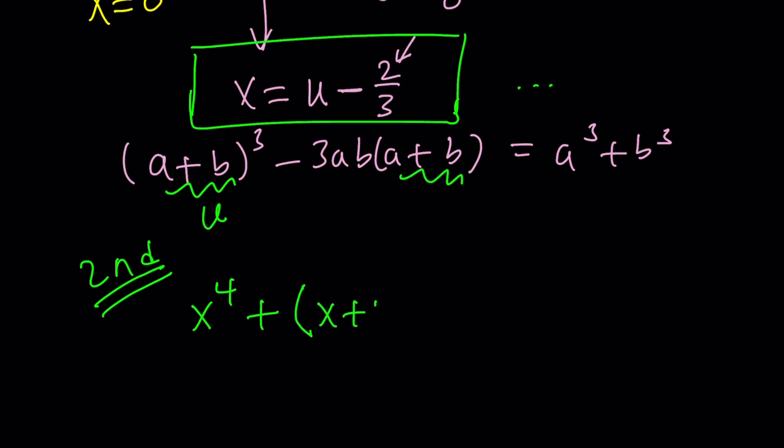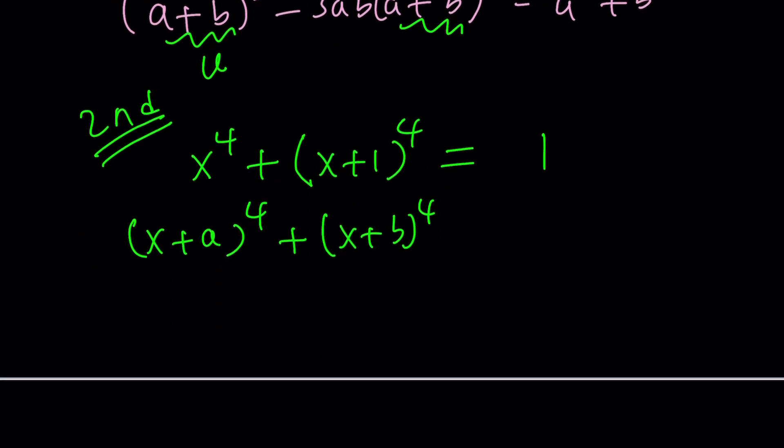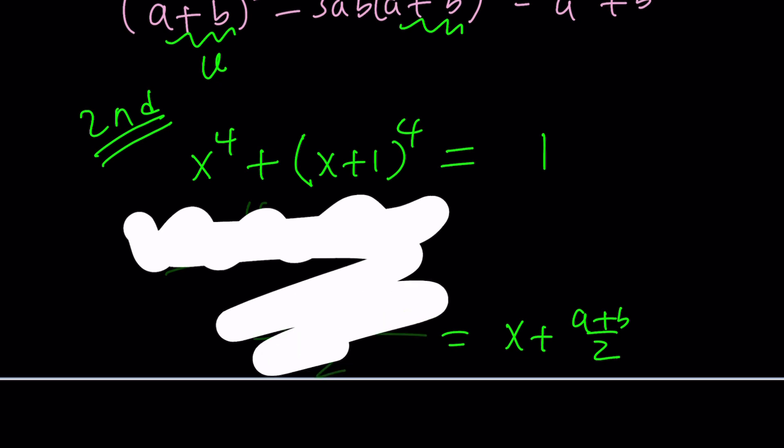So for our second method, what do you think we're going to do? We're going to use a very nice method, which is kind of like a really cool trick that is often used with these kinds of equations. So whenever you have something like x plus a to the fourth and x plus b to the fourth, what we do is we average these two terms. And when we average them, we just add them up and divide by two. And of course, that gives us x plus average of a and b. Makes sense, right? So what's in the middle of a and b? a plus b divide by two. So that's what we're going to do here.